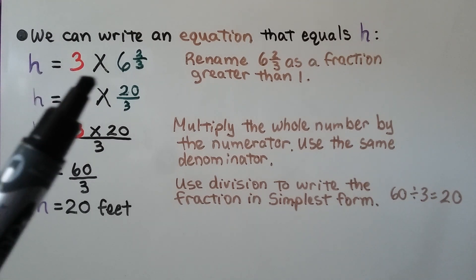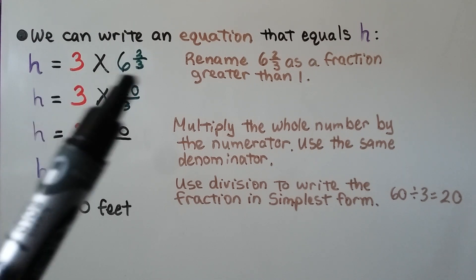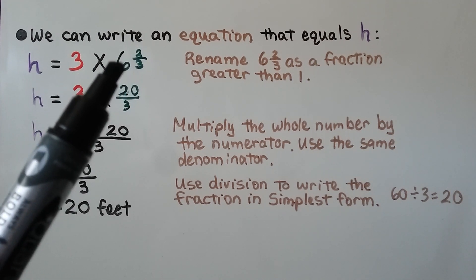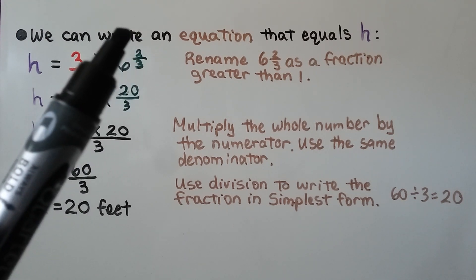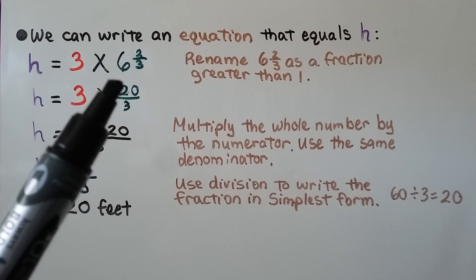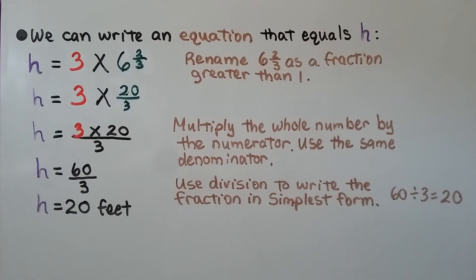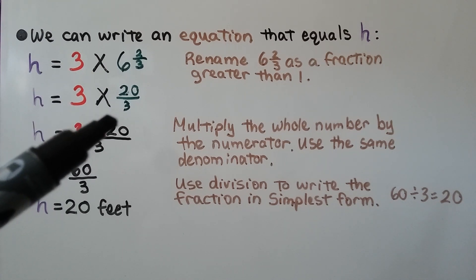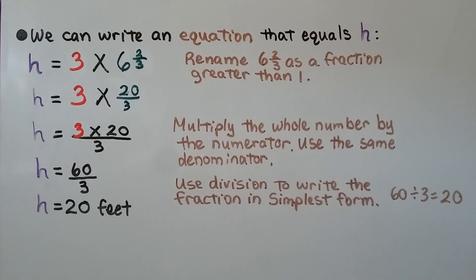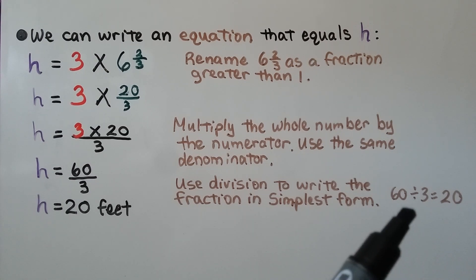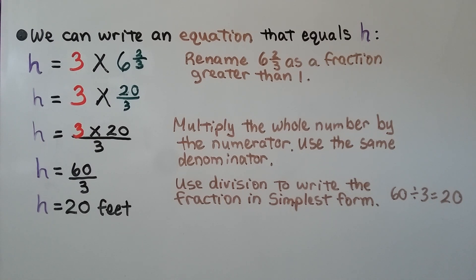h is equal to 3 times 6 and 2 thirds. To multiply, we rename 6 and 2 thirds as a fraction greater than 1: 6 times denominator 3 is 18, plus the numerator 2 gives us 20, written over 3 — that's 20 thirds. Then 3 times 20 thirds is 3 times 20 over the 3 denominator, giving 60 thirds. We use division to simplify: 60 divided by 3 equals 20. The apple tree was 20 feet tall in 2019.